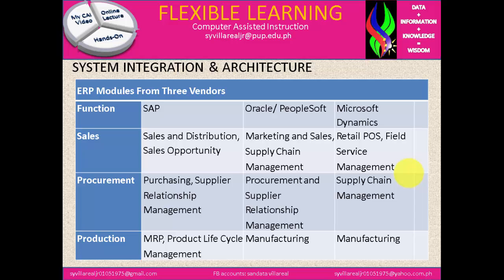In procurement, those are all ERP and it depends on what you are going to select as a software integration. Under production: SAP has MRP and product lifecycle management; Oracle has manufacturing; and Microsoft Dynamics also has manufacturing. In terms of production, it has been created for manufacturers like Oracle and Microsoft, but in SAP it can be developed in a very different way, such as for universities and IT.